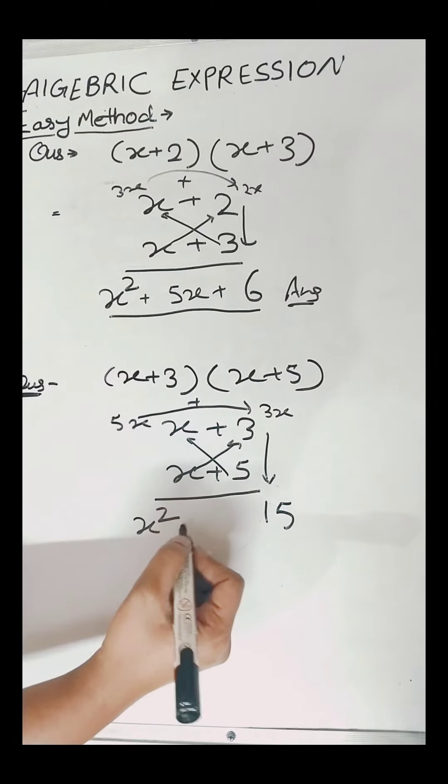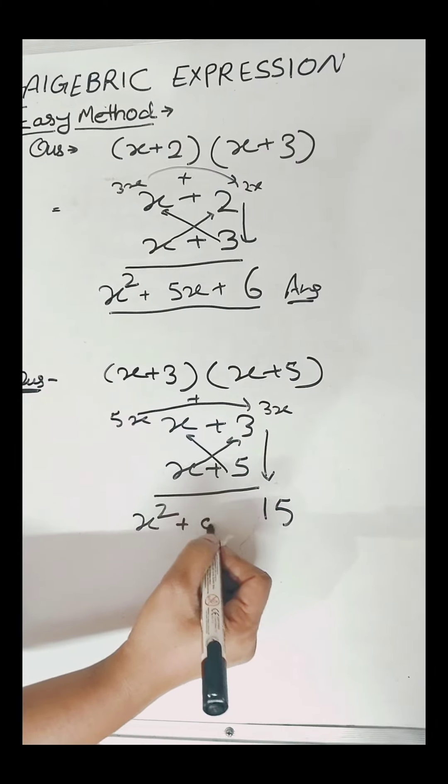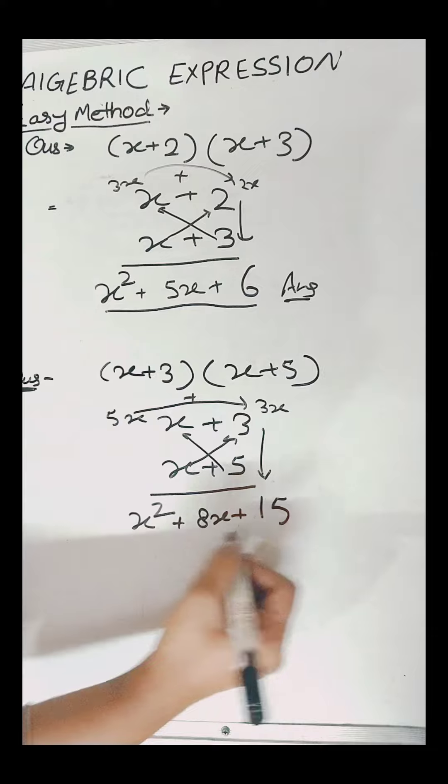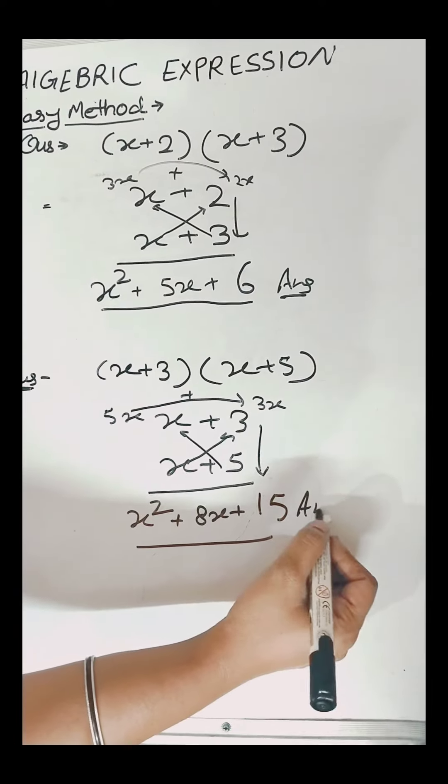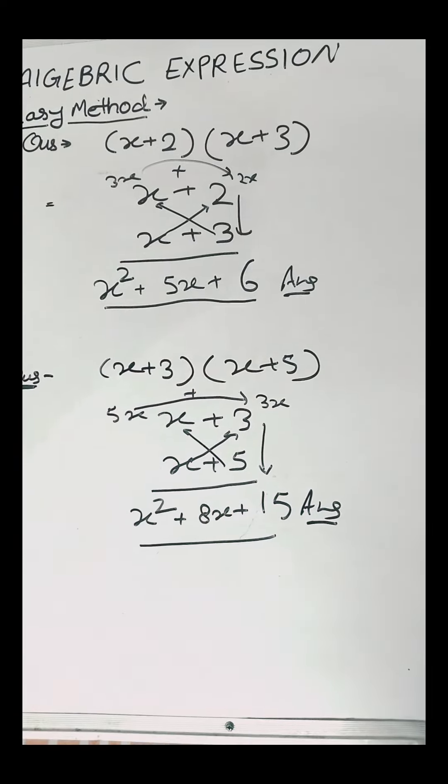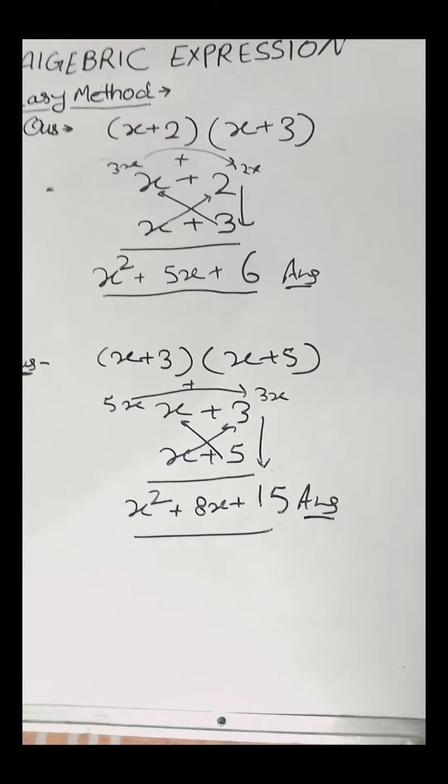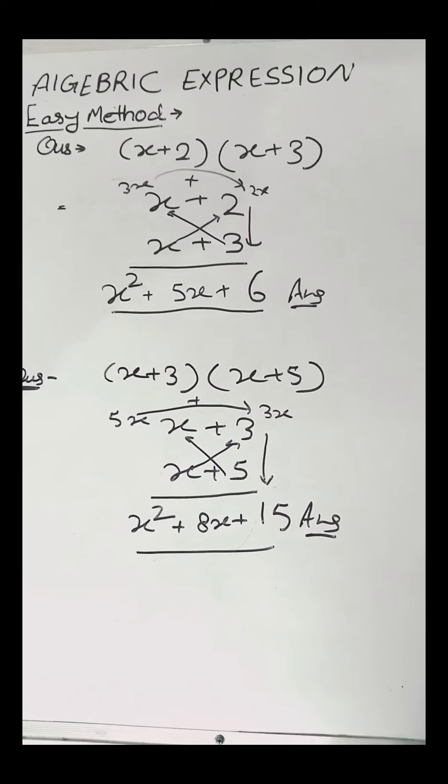Now we will add 5x and 3x, which is equal to 8x. So the answer is x square plus 8x plus 15. Hope this trick will be helpful for you. Thank you.